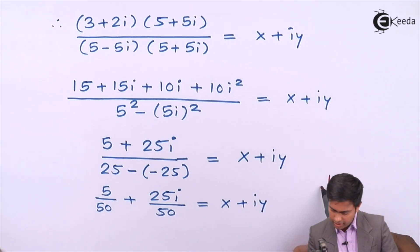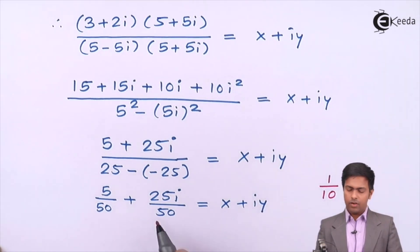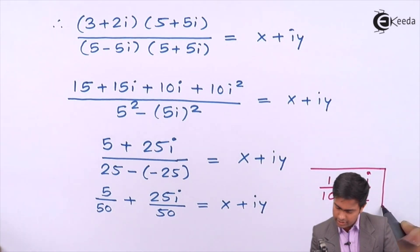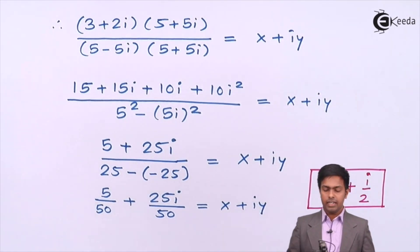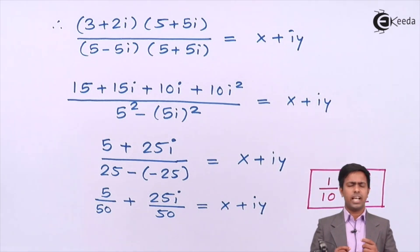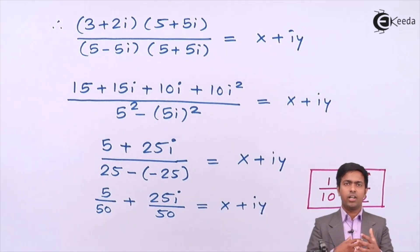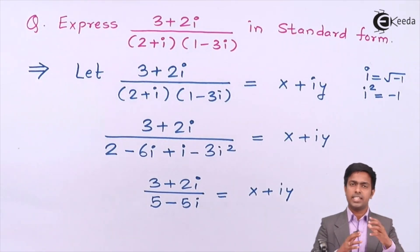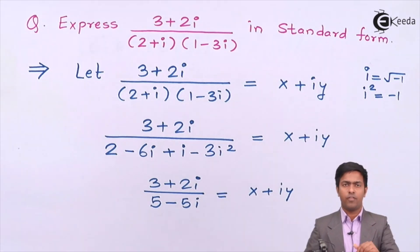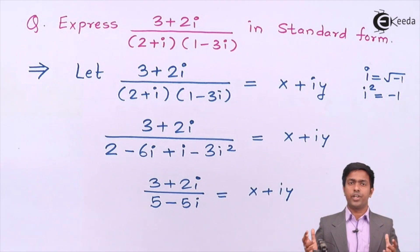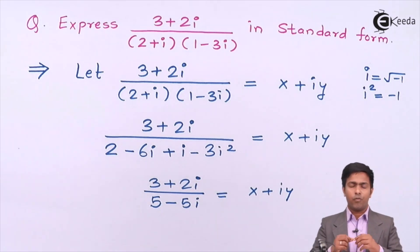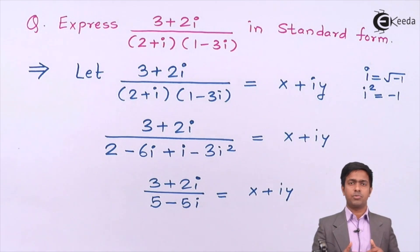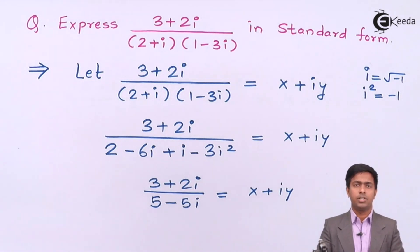Writing the final answer: 5 over 50 plus 25i over 50, which simplifies to 1 over 10 plus i over 2. This is the standard form because it has only one real part and one imaginary part. We have successfully expressed the given number in standard form. If you want to learn more engineering mathematics, login to ek.com where you can enjoy maths unlimited and get all concepts at one place. Thank you very much, see you in the next video.